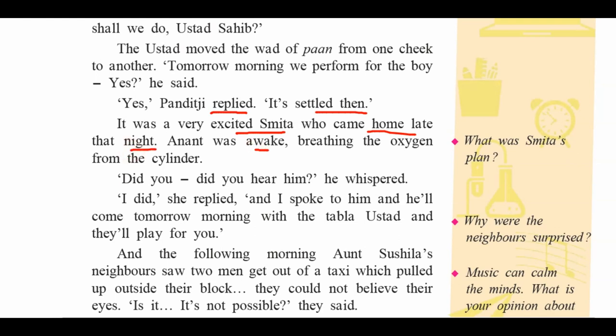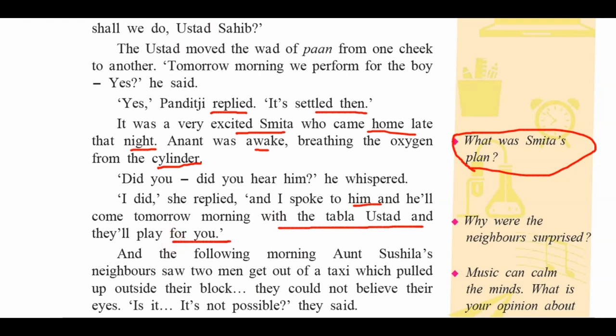Anant was awake, breathing oxygen from the cylinder. Smita's plan was to request Pandit Ravi Shankar and Allah Rakhas Sahib. 'Did you hear him?' Anant whispered — he was excited and asked Smita. Smita replied, 'Yes I did, and I spoke to him, and he will come tomorrow morning with the tabla, Ustad, and they will play for you.' This was the great news — this was the plan of Smita.